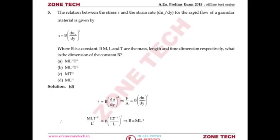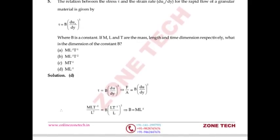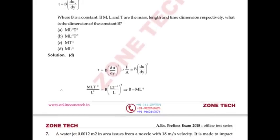Question number 5: The relation between stress and strain rate du/dy for rapid flow of granular material is τ = b(du/dy)², where b is constant. We need to find the dimension of constant b. Taking dimensions of shear stress τ = force/area = MLT⁻²/L² = ML⁻¹T⁻². Velocity gradient du/dy has dimension LT⁻¹/L, squared. Simplifying, dimension of b = ML⁻¹. Answer is D.